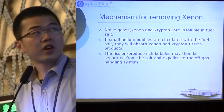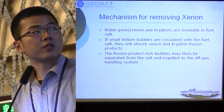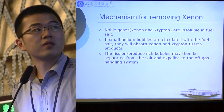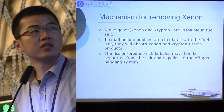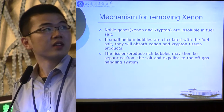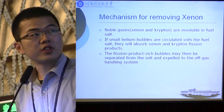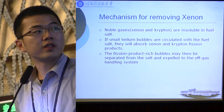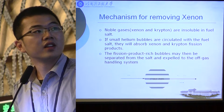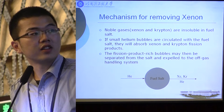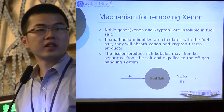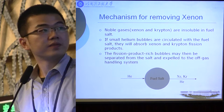If small helium bubbles are circulated with the fuel salt, they will absorb the xenon and krypton fission products. The fission product-rich bubbles may then be separated from the salt and sent to the off-gas handling system. You can see the process in this picture.